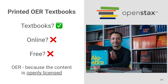They definitely are textbooks, and they're available online and in print. This is a picture of the founder of OpenStax with several printed textbooks. These definitely are textbooks, but they are definitely not online, and they're definitely not free — because ink and paper and shipping cost money. But we would still call these textbooks OER because their content is openly licensed.